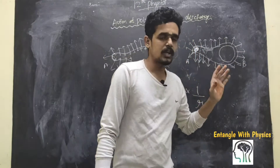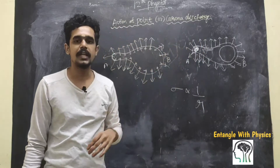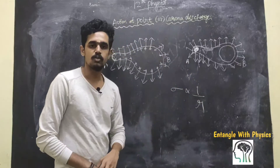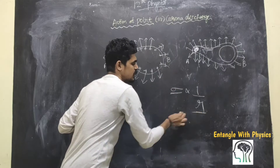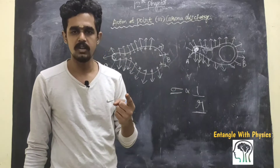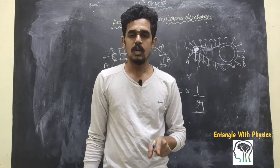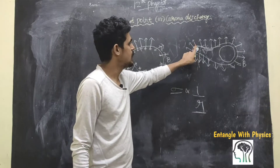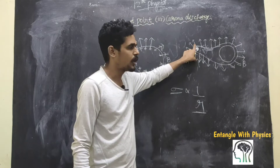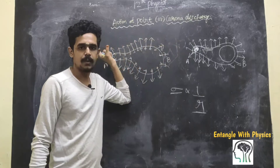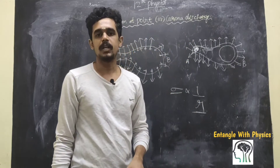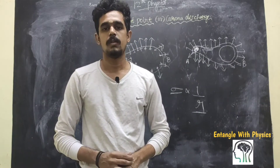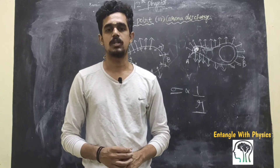This is a very important principle — it is the principle of lightning arrestors and action at a point. In basic form: surface charge density is inversely proportional to radius. If your radius is very large, surface charge is very low. If your radius is very small, surface charge density is very high. Due to the high electric field at that point, positive ions get repelled and negative ions get attracted. This is an easy 2 to 3 marks question on action at a point and Corona Discharge. Thank you.